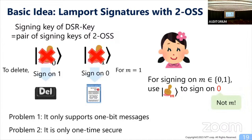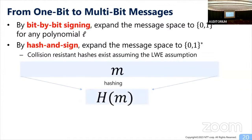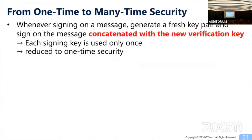This is not a full construction because two problems remain. First, it only supports one-bit messages. Second, it is only one-time secure. We overcome both using analogues of classical techniques. For multi-bit messages, we use bit-by-bit signing with hashing: apply a hash function to produce a small digest H(M), then sign each bit of H(M). This expands the message space while preserving one-time security. For strengthening one-time to many-time security, whenever signing a new message, we generate a fresh key pair and sign the message concatenated with the new verification key. Each signing key is thus used only once, reducing many-time security to one-time security.